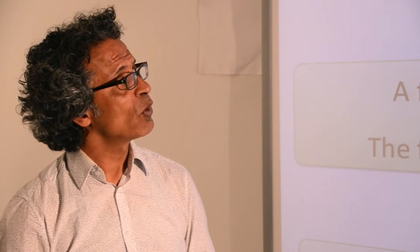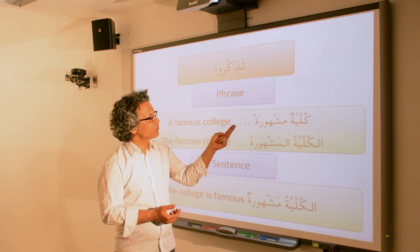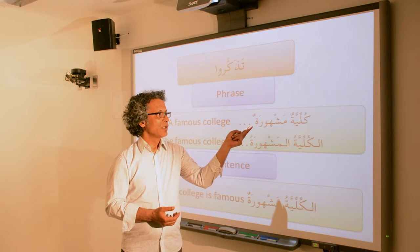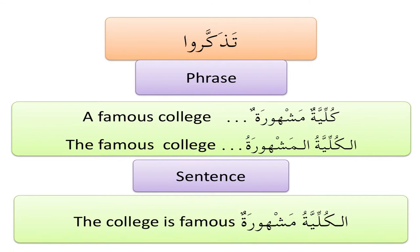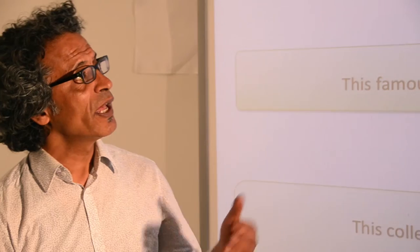Remember, when we talked about the phrase and the sentence in Arabic, agreement between the noun and the adjective is extremely important. In our first combination — كُلِّيَّةٌ مَشْهُورَةٌ — both the noun and the adjective are indefinite, so we're in the realm of a phrase: 'a famous college.' When you make them both definite — الكُلِّيَّةُ المَشْهُورَةُ — you're also saying 'the famous college,' still not a full sentence. However, if you make them disagree in definiteness — الكُلِّيَّةُ مَشْهُورَةٌ — now this is a جملة اسمية with مبتدأ وخبر: 'the college is famous.'